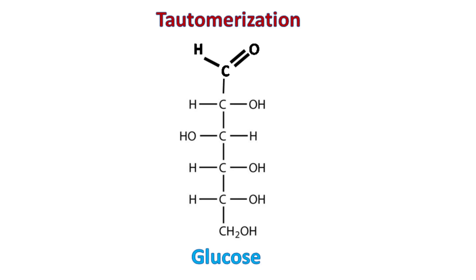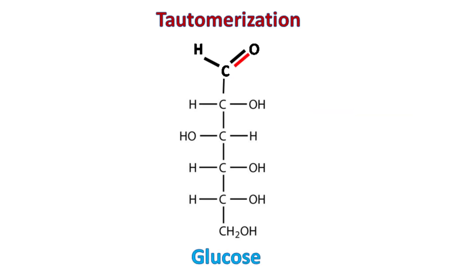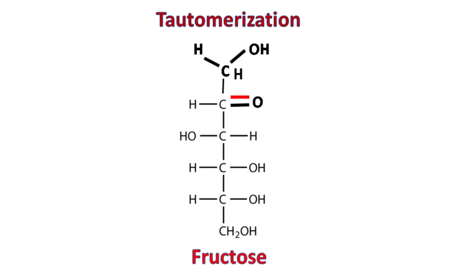Tautomerization. This is a process in which there is a shifting of hydrogens from one carbon to another to form enediols. The enediol formation is usually facilitated in an alkaline environment. For example, glucose can be converted to fructose via its intermediate enediol in an alkaline environment.